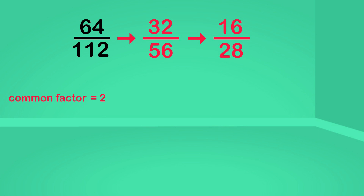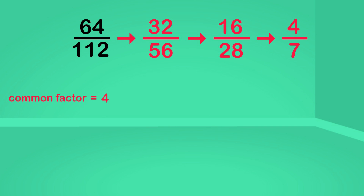We've reduced the original fraction, but it's not yet in its simplest form. We know this because we can still divide further — both can still be divided by two. Thirty-two divided by two is sixteen. Fifty-six divided by two is twenty-eight. We can divide further still. Now I can see a larger common factor: four. Four is a factor of both the numerator and the denominator. Sixteen divided by four is four, and twenty-eight divided by four is seven. Four-sevenths. We know this fraction is now in its simplest form, because there are no more common factors other than one.